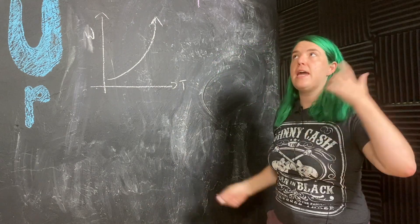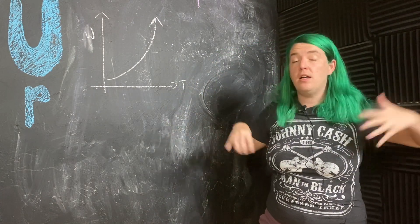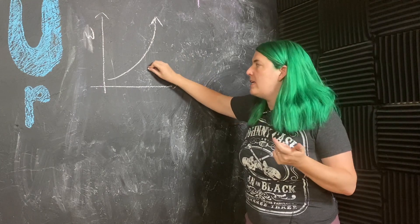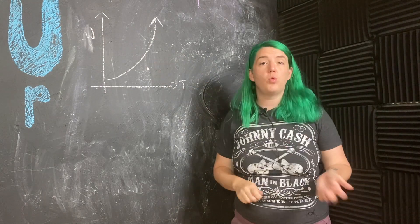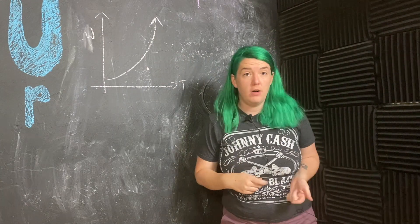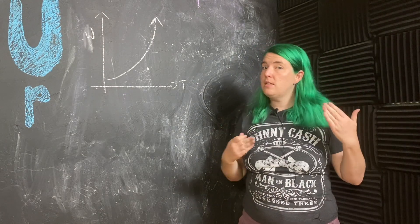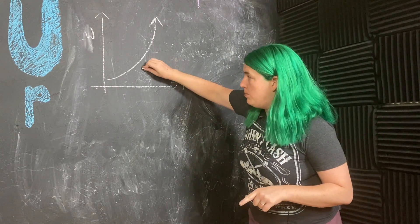So let's imagine that the air in this room that is unsaturated lives somewhere about here on the graph, below my saturation curve. Then dew point temperature would be...